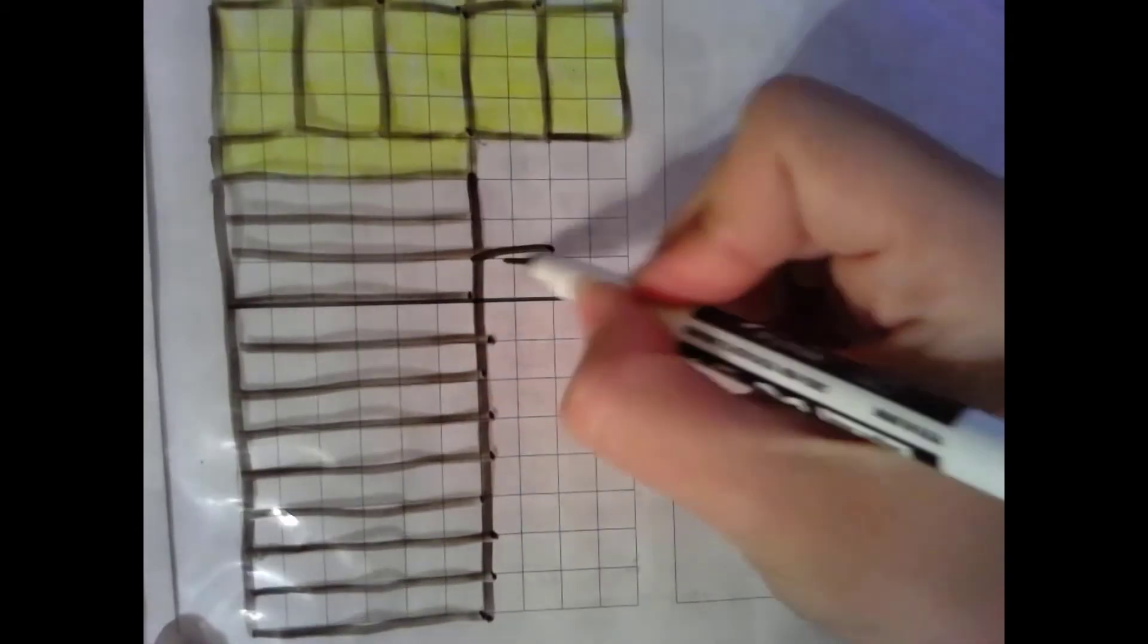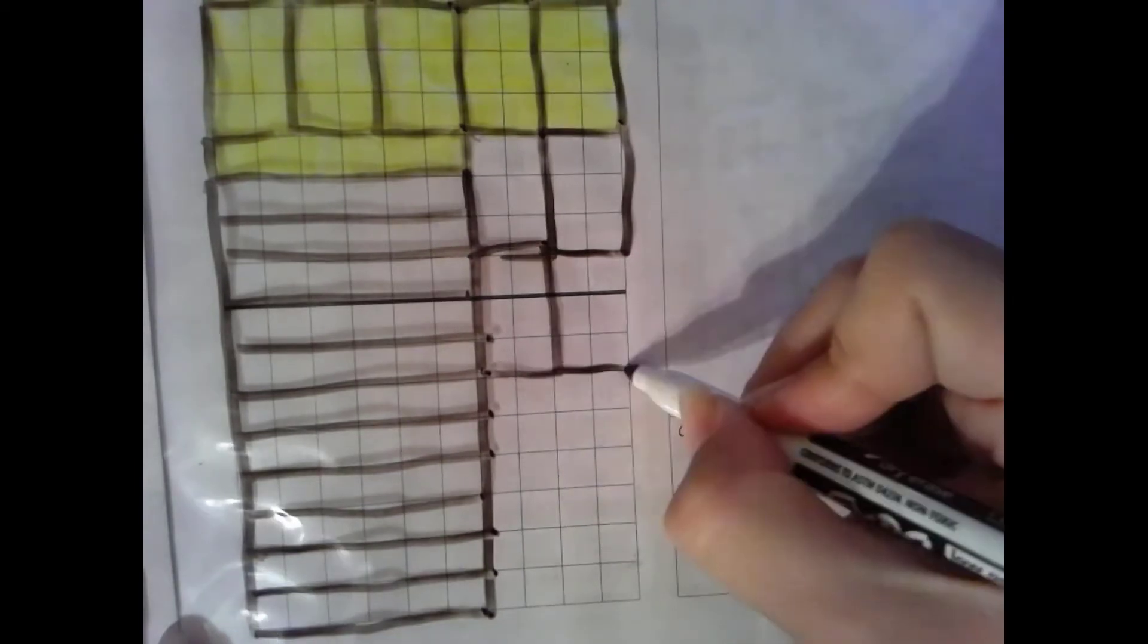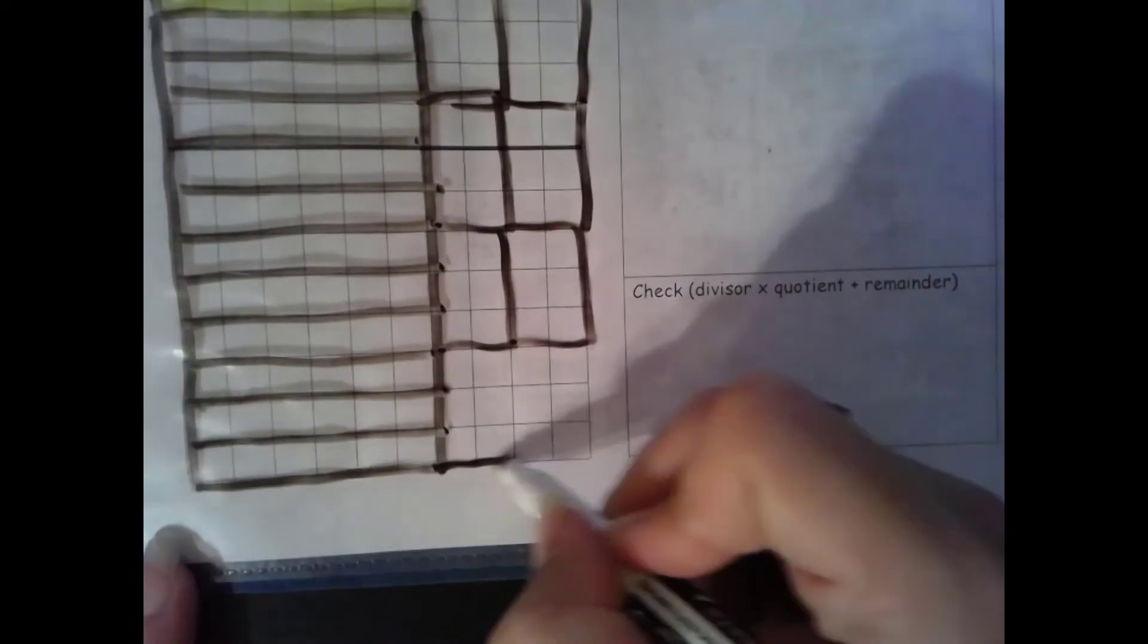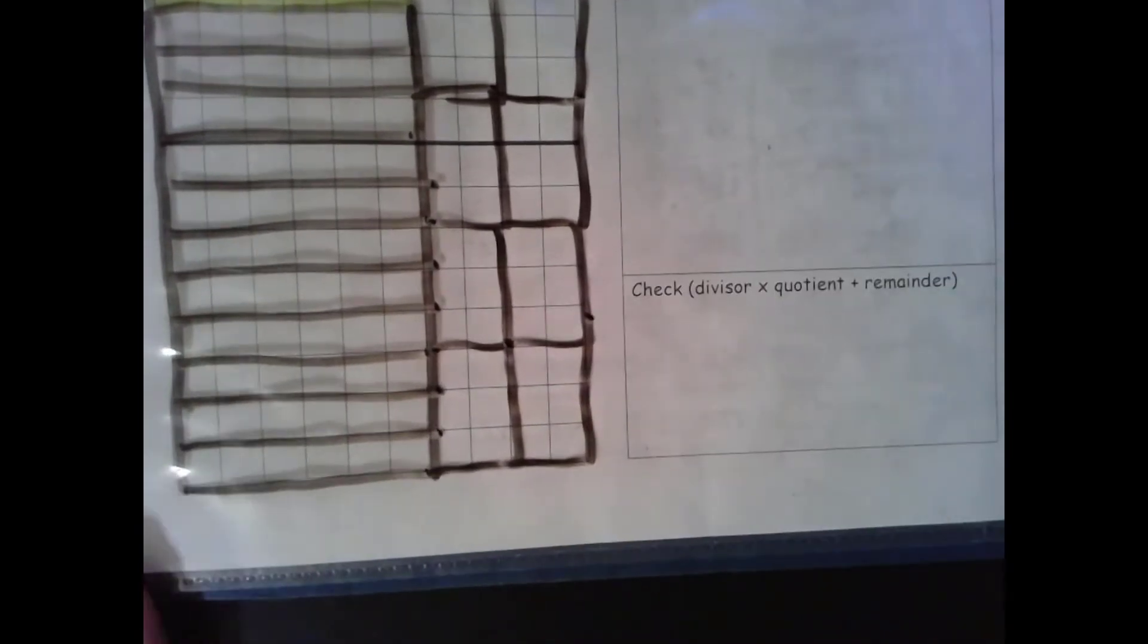Cut off 6 from each of these rows. And then 2 times 3 gives me a rectangle with an area of 6 and none left over. Finally we found our greatest common factor. It is 6.